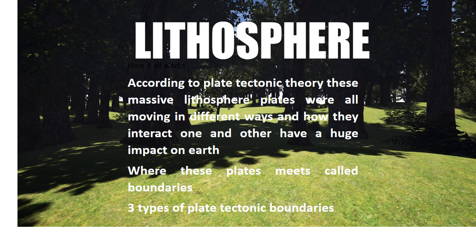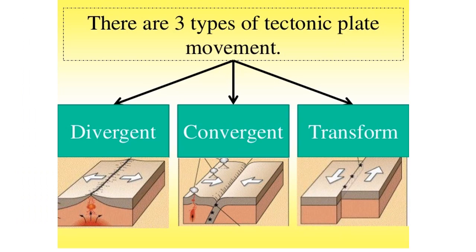And how does it work? According to the plate tectonics theory, these massive lithospheric plates are all moving in different ways, and how they interact with one another has a huge impact on Earth. Where these plates meet are called boundaries, and there are three types of plate tectonic boundaries: divergent boundaries, convergent boundaries, and transform boundaries.